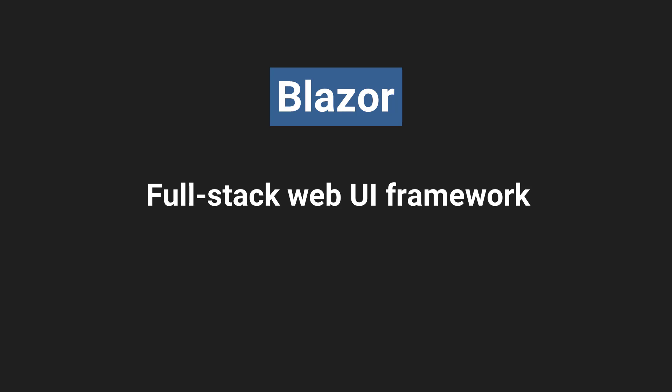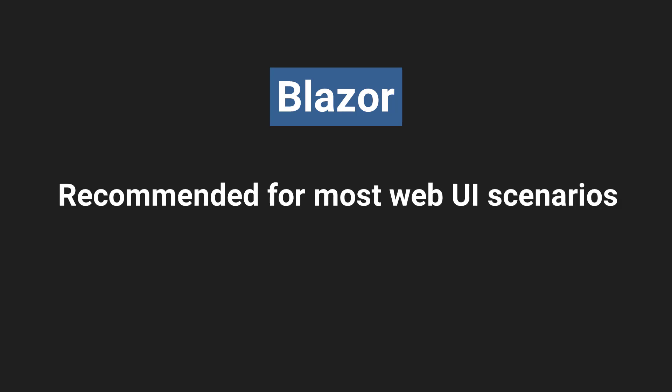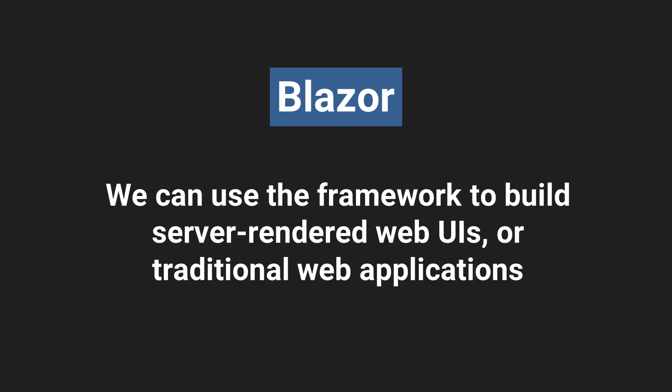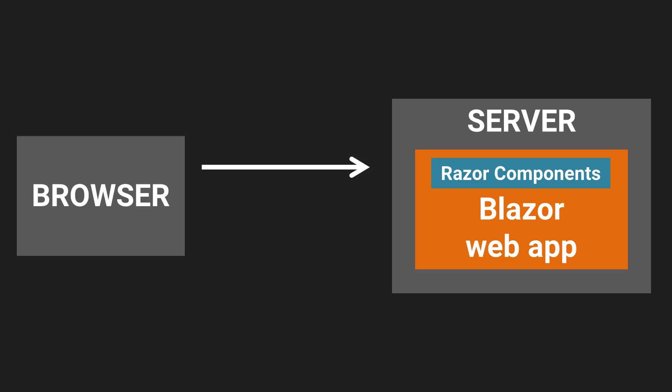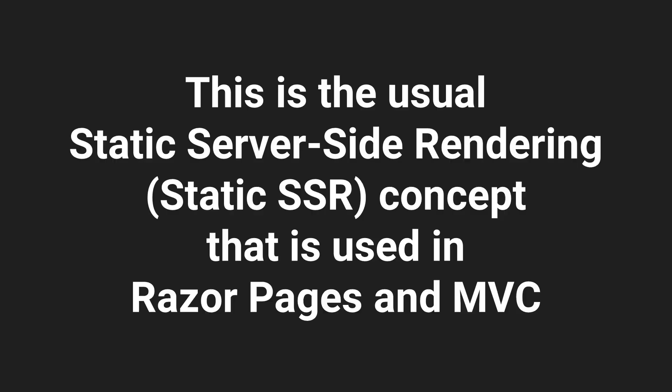Blazor is a full-stack web UI framework and it is the recommended framework for most web UI scenarios. We can use Blazor to build server-rendered web UIs or traditional web applications. A Blazor web app hosted on a server consists of Razor components. The browser sends a request to the server, which is routed to a Razor component. The component executes on the server to produce a web UI of static HTML and CSS, which is sent back to and displayed by the client browser.